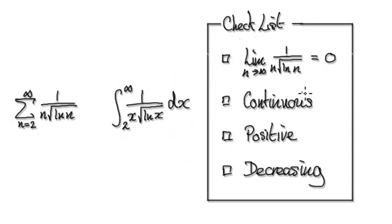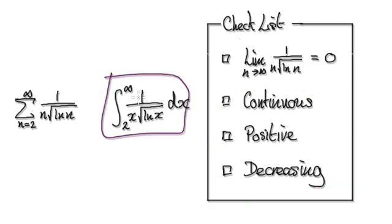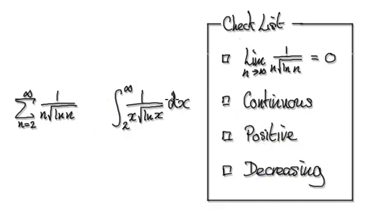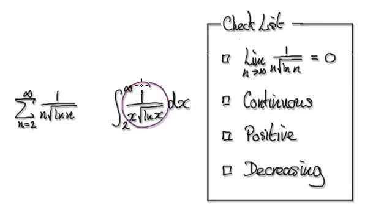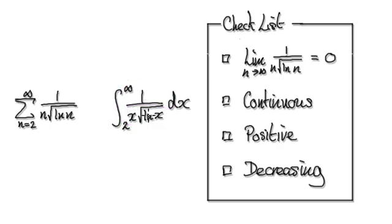In order to use that theorem, we need to check three things for the integral: that this function is continuous, positive, and decreasing. So the first question is, is this thing continuous? You're really asking, when will this thing break down? It breaks down when the denominator equals 0. Let's check that nothing breaks down.